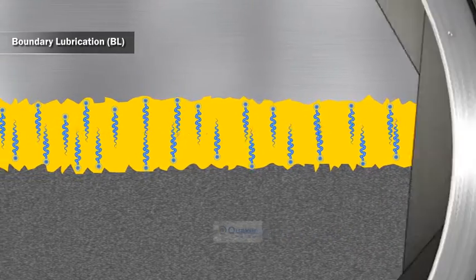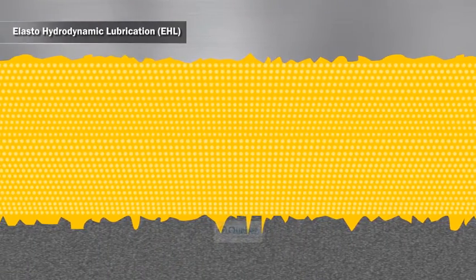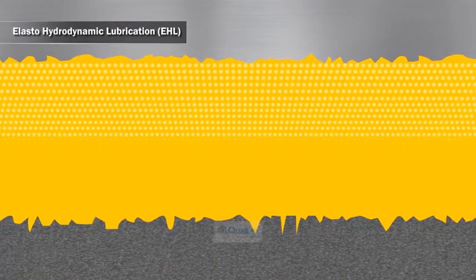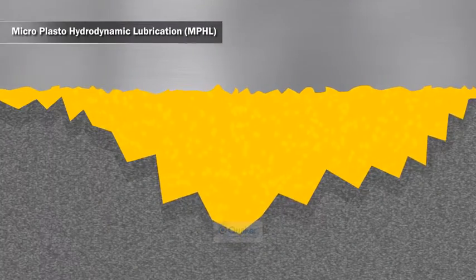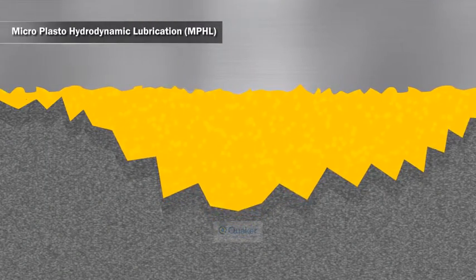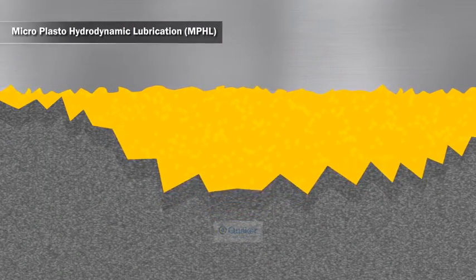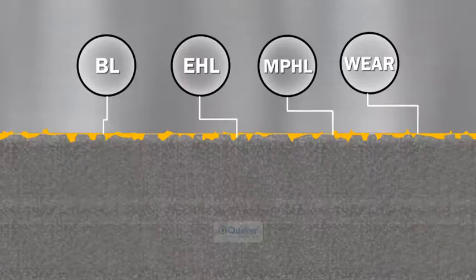In areas where a thick lubricant film separates the surfaces, the lubricant flow properties under high pressure determine the friction. Under the influence of plastic deformation and sliding speed, film formation can occur inside the bite in cold rolling.